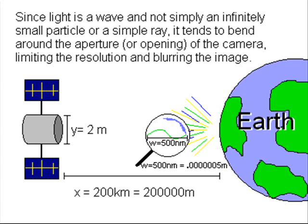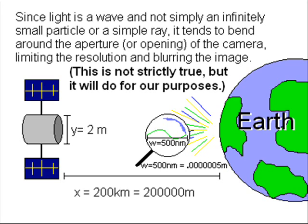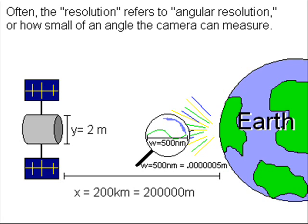Since light is a wave, and not simply an infinitely small particle or a simple ray, it tends to bend around the aperture of the camera, limiting the resolution and blurring the image. The resolution often refers to angular resolution, or how small of an angle your camera can measure, especially when you are talking about astronomy.